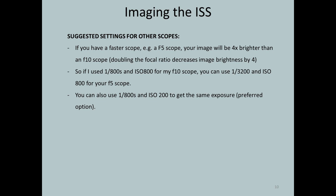If you're using a scope with an f/5 focal ratio, such as a 10-inch Dobsonian, your image would be 4x brighter than my f/10 scope. So where I used 1/800th at ISO 800, you would use 1/3200th at ISO 800, or equivalently 1/800th at ISO 200. The lower ISO option is preferred since your image will be less noisy.